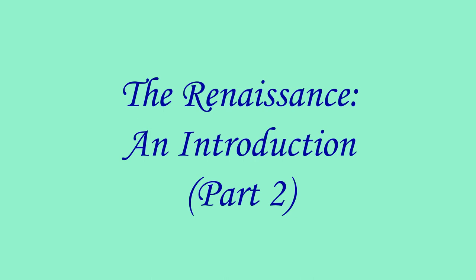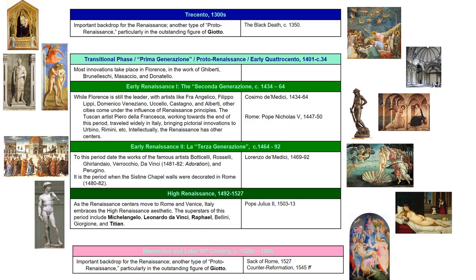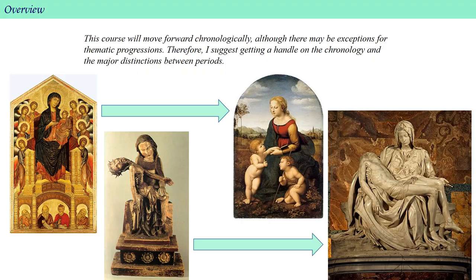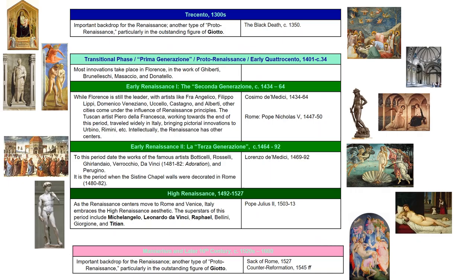This video is part two of the introductory Art of the Italian Renaissance lecture. I left at the point where I introduced the major periods we will be studying this semester: the Early and High Renaissance, which are bookended by the style of the Trecento and Mannerism. This course will move forward chronologically, although there may be exceptions for thematic progressions. I suggest getting a handle on the chronology and the major distinctions between periods.